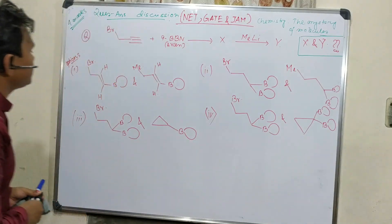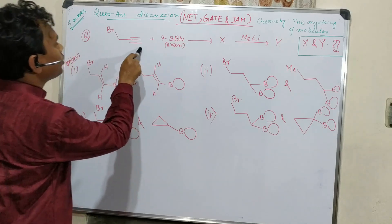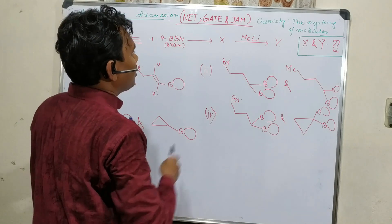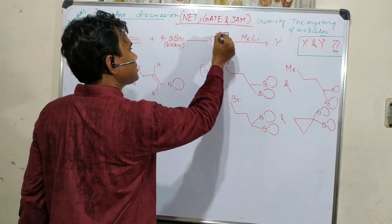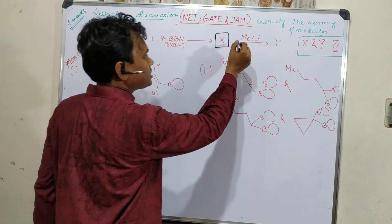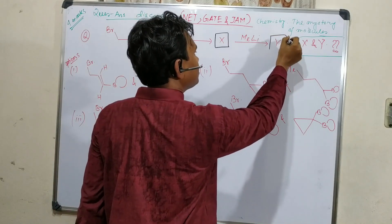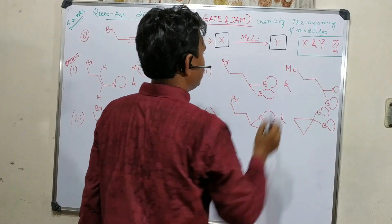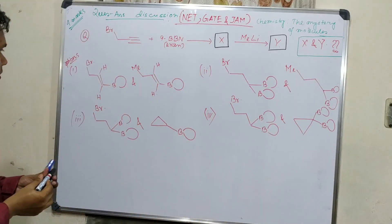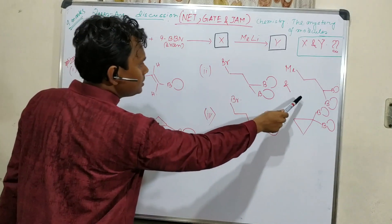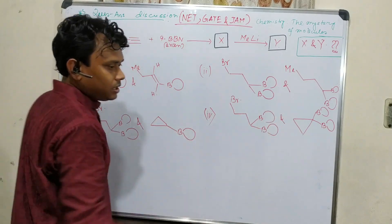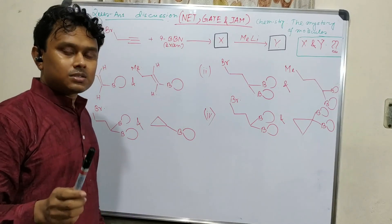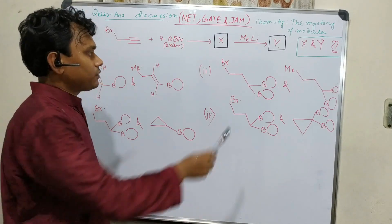The question is: this bromo alkyl plus 9-BBN produces a product X. And the reaction of this X with methyl lithium produces another product Y. So the question is, what is X and Y? Four options are given: A, B, C, and D.